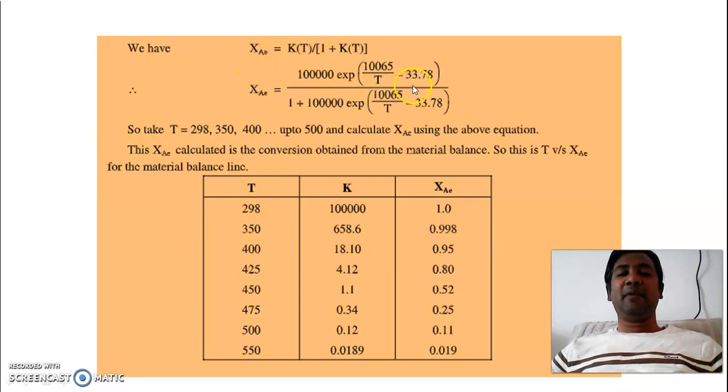Now X_AE is K(T) upon 1 plus K(T), as you are knowing. So X_AE can be calculated in this way for given temperature. So at T is equal to 298 Kelvin, at K is equal to 100,000, so X_AE is 1. So in this way you can just have this material balance graph where T, K, and X_AE are shown here in the table. After just noting the values of temperature between 298 Kelvin to 550 Kelvin.